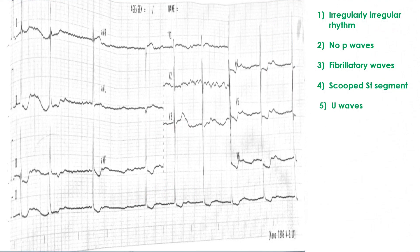Summarizing what we have identified so far: an irregularly irregular rhythm, no P waves, fibrillatory waves of atrial fibrillation, an ST segment that is scalloped or scooped, and U waves.